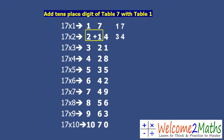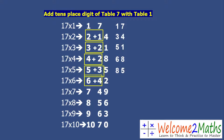We do the rest of the table in the same way. 17 threes: 3 plus 2 is 5, write 1 as it is — so it's 51. 17 fours: 4 plus 2 is 6, write 8 as it is — so it's 68. 17 fives: 5 plus 3 is 8, then 5 — so it's 85. 17 sixes: 6 plus 4 is 10, write 2 as it is — so it's 102.